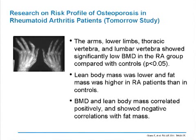The next item was patients with rheumatoid arthritis. A group from Japan, in the TOMORROW study, evaluated bone mineral density in the arms, lower limbs, and vertebrae, showing significantly lower BMD in the RA group compared to controls. They also measured lean body mass, which was lower, and fat mass, which was higher in RA patients than controls. Whether glucocorticoid use contributed was unclear from the poster data. They showed that bone mineral density and lean body mass correlated positively and showed a negative correlation with fat mass.